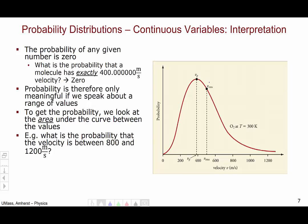For example, what is the probability that the velocity of an oxygen molecule at 300 K has a velocity between 800 and 1200 meters per second? Well, we have the probability distribution.